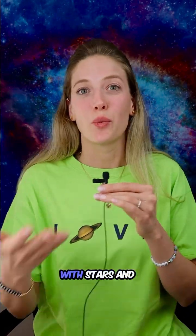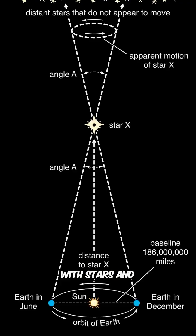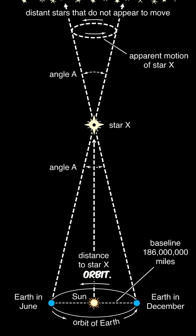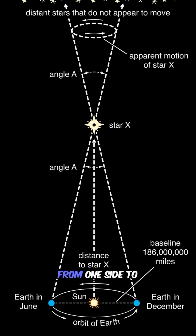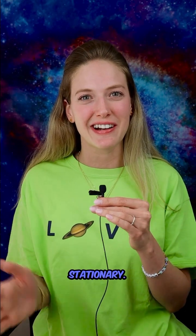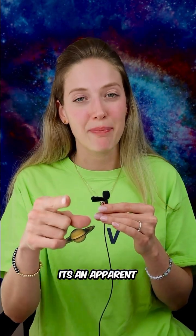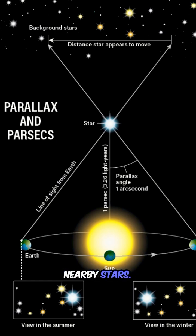Astronomers use parallax with stars and measuring their distances from Earth. By observing a star from different points in Earth's orbit, they measure the apparent shift in position, just like your finger apparently shifting from one side to another. But you didn't move your finger — your finger stayed stationary. It's an apparent shift. This parallax allows astronomers to calculate the distance to nearby stars, forming a crucial...